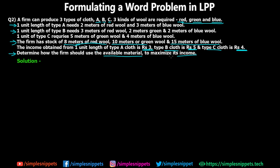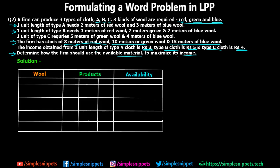Let's start by formulating the entire table, which is step one. If you've seen the previous video there will be certain similarities, except here we have wool instead of machines. The products column and availability column are the same. So let's write down the types of products: we have product A, product B, and product C. The three types of wool are red, green, and blue.